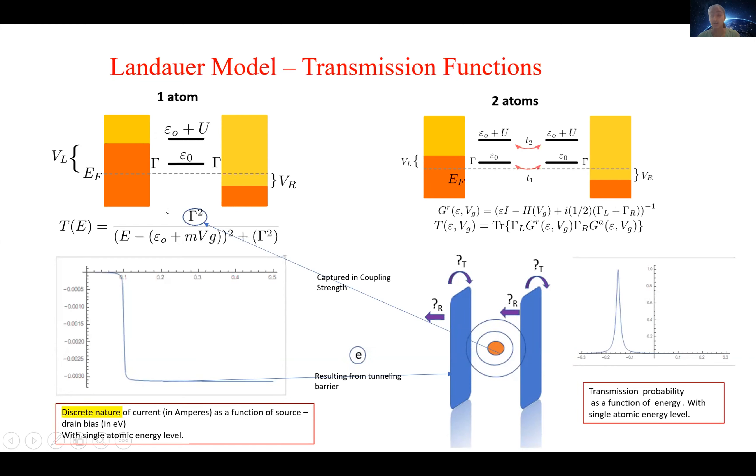However, if we increase the coupling strength, which is the strength of connection between these electrodes and the central region too much, this barrier decreases and eventually disappears. Electrons of any energy can exist within the atom, and the current function becomes continuous.